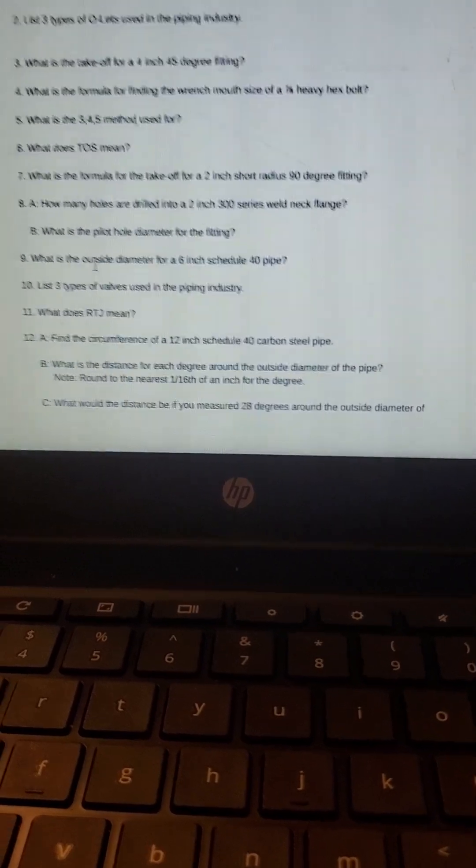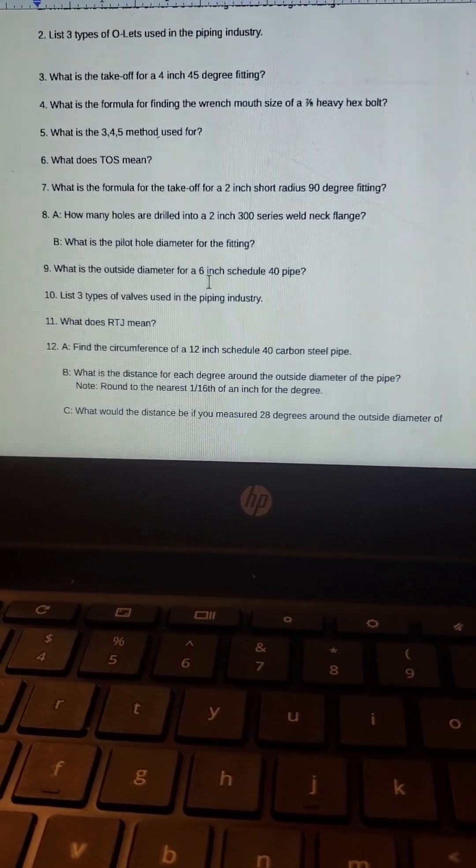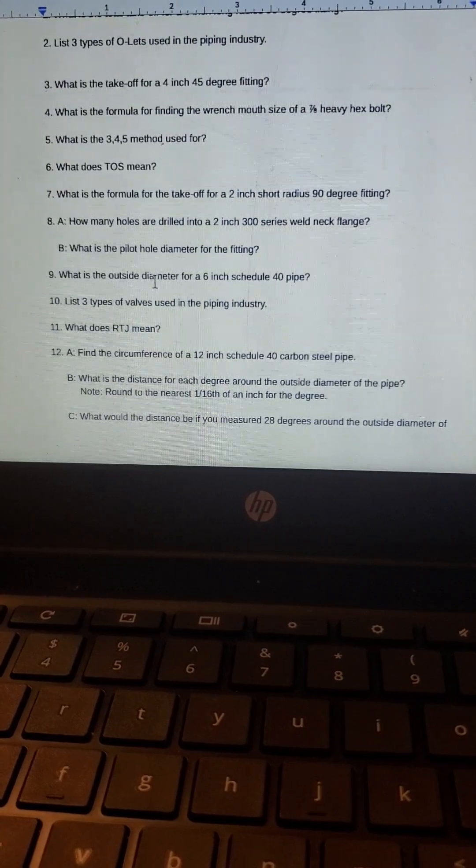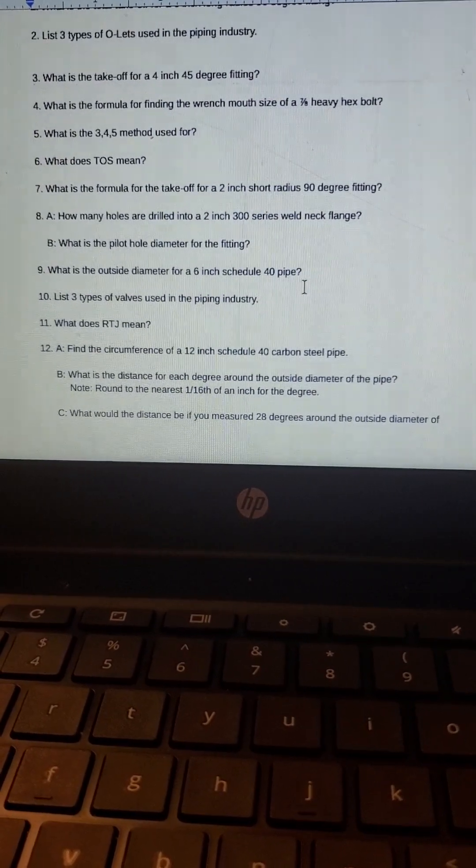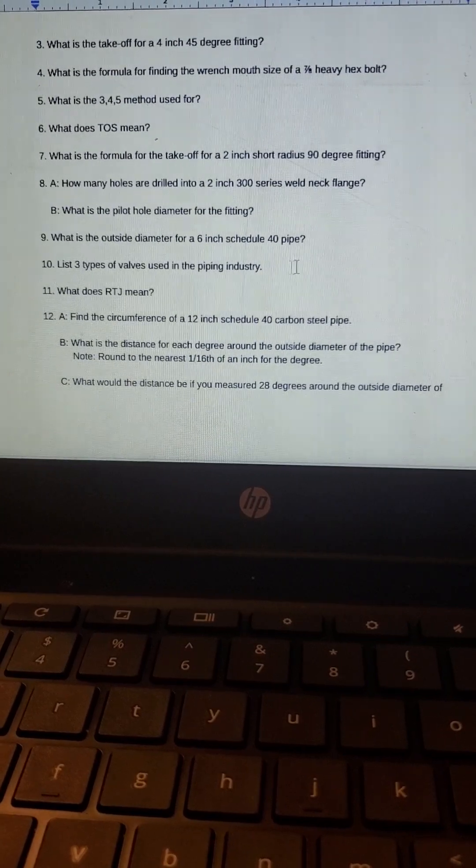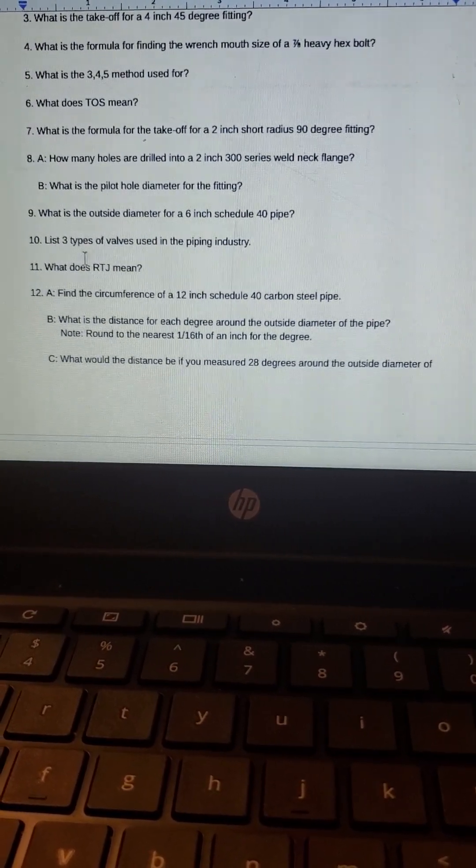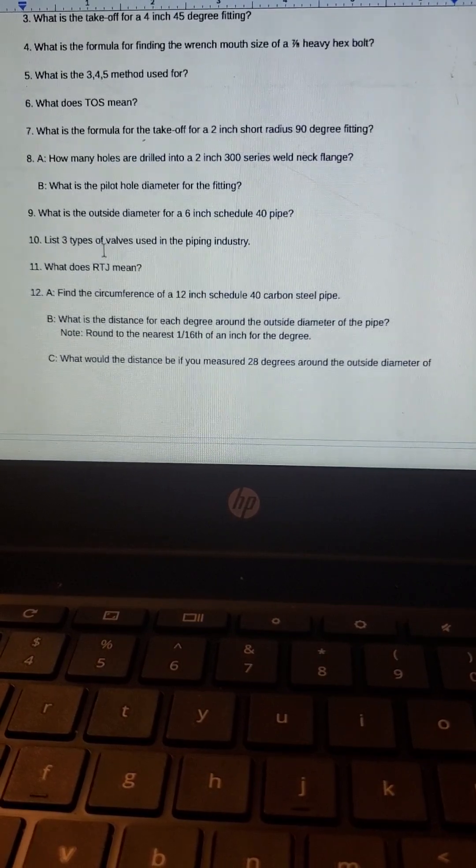What is the outside diameter for a six inch schedule 40 pipe? So the outside diameter, that's the tricky one, so it'd be six and five eighths. Because schedule 40 is five sixteenths. Three types of valves would be check valve, ball valve, and the gate valve.